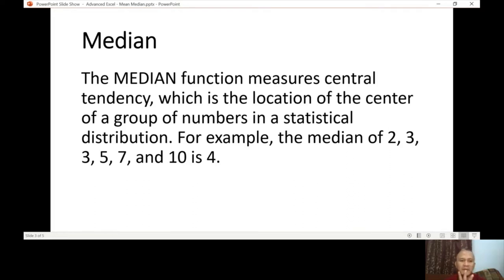For example, you have 5 numbers: 2, 3, 3, 5, 7. The third position is the center or the central location of this. So the median is 3, central tendency. We call it central tendency.